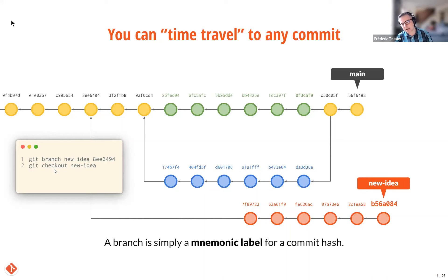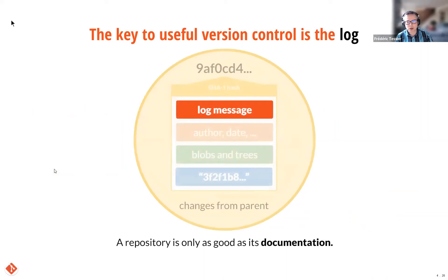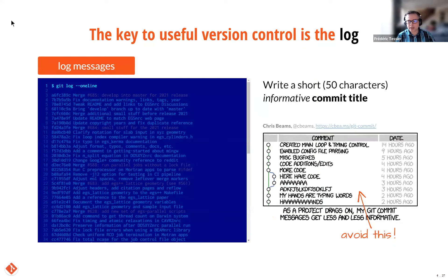To end this theory section, I'd like to come back to commit content to talk about documentation. Each commit contains a log message which you write to document the change. A repository is really only as good as its log messages, because these allow you later to audit the repo and figure out what happened, or travel back in time to the right point. In other words, log messages are like lab book entries for an experiment. When you're in a repository, you can view these log entries with the git log command.